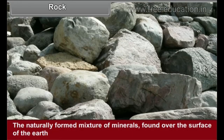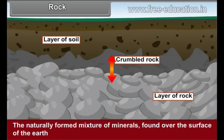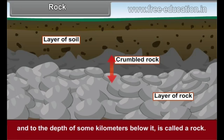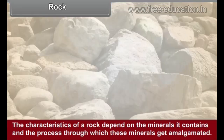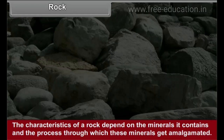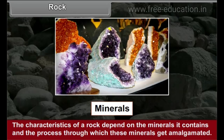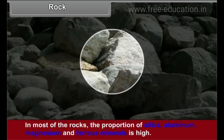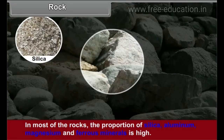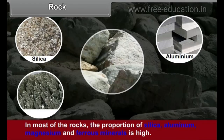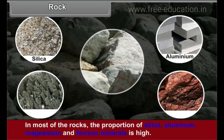Rock: The naturally formed mixture of minerals found over the surface of the Earth and to the depth of some kilometers below it is called a rock. The characteristics of a rock depend on the minerals it contains and the processes through which these minerals get amalgamated. In most of the rocks, the proportion of silica, aluminium, magnesium and ferrous minerals is high.